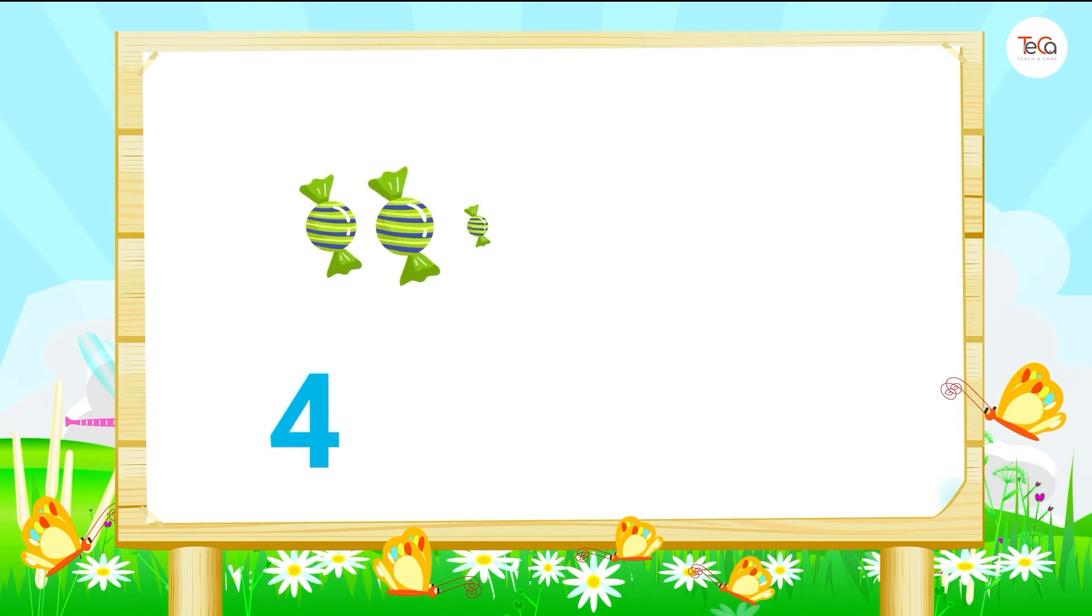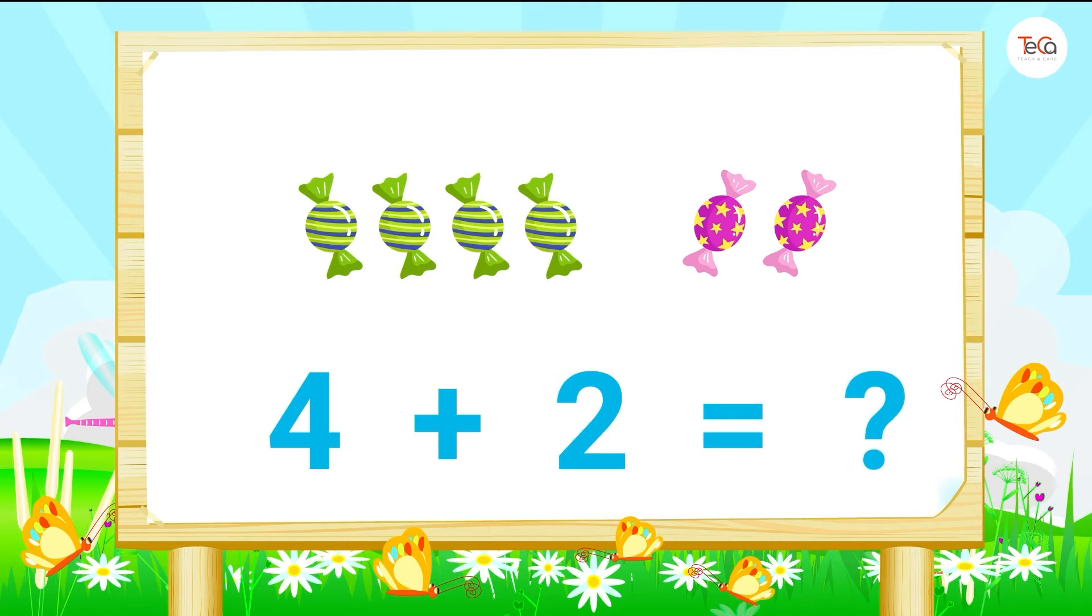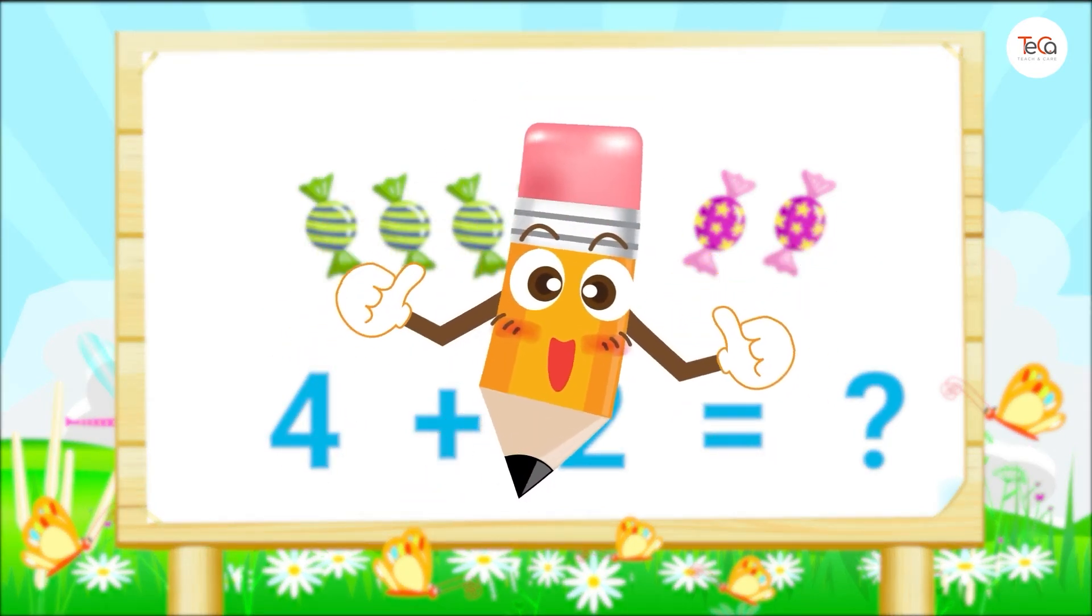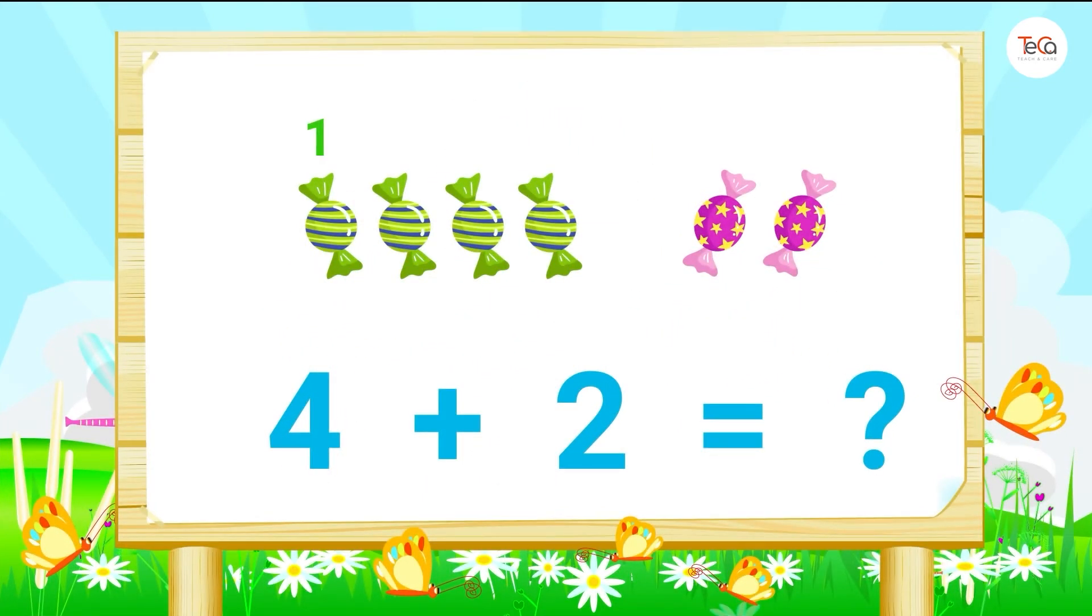Four candies plus two candies equals... Good job! Here we have one, two, three, four, five, six candies. So four plus two equals six.